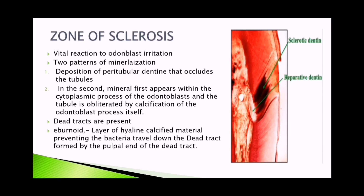The irritation is caused by caries products like acids, necrotic acids, and proteolytic action of bacteria. Two patterns of mineralization take place. The first is deposition of peritubular dentine that occludes the tubules — peritubular dentine deposition starts from the odontoblast, occluding the tubules. In the second pattern, mineral first appears within the cytoplasmic process of the odontoblast and the tubule is obliterated by calcification of the odontoblast process itself.